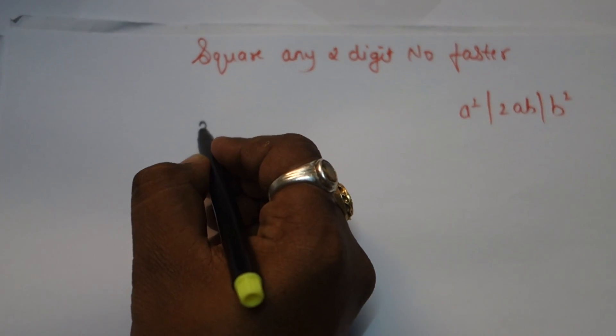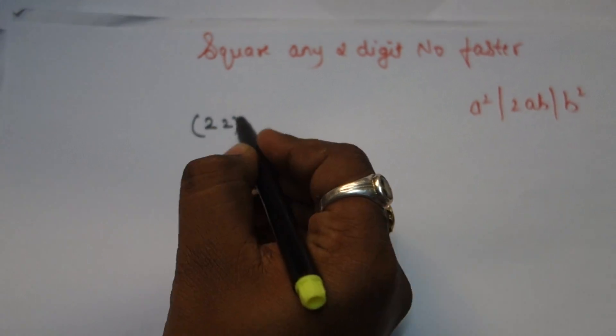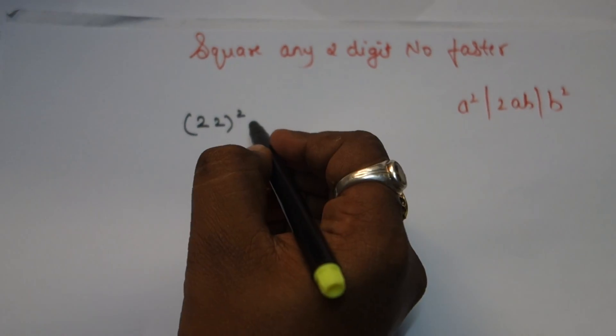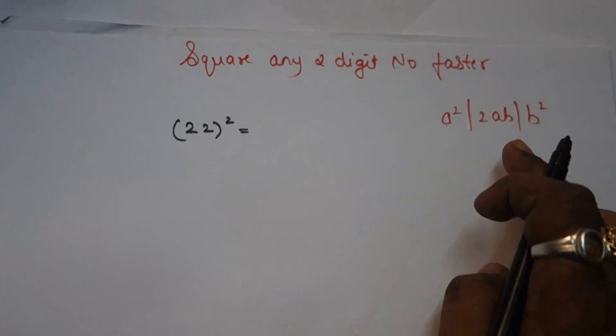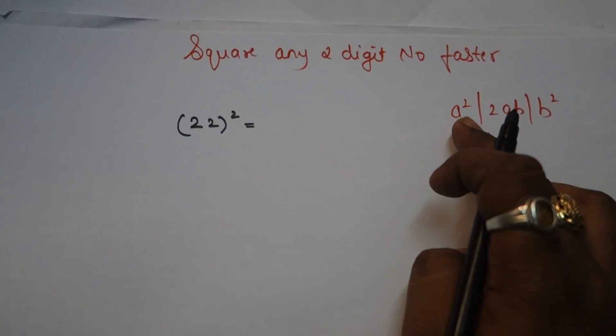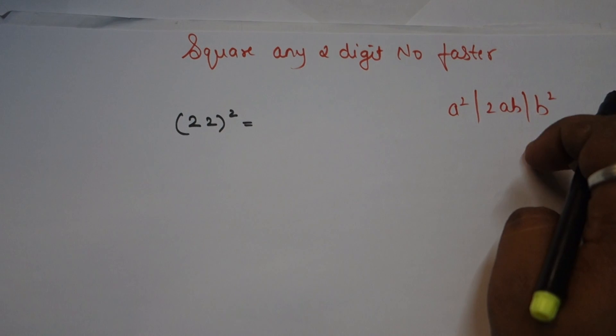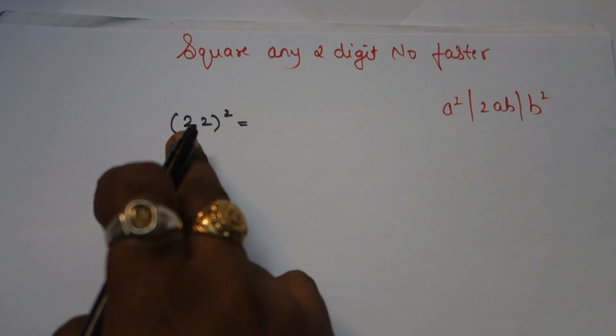To find the square of 22, we apply this formula: a² slash 2ab slash b². We need the value of a and b.